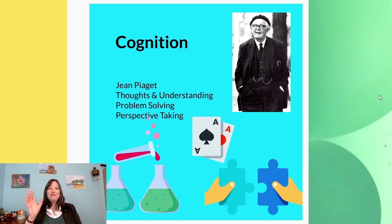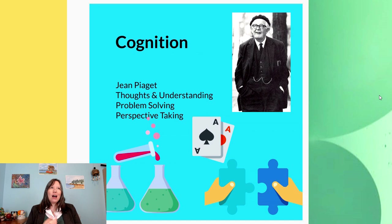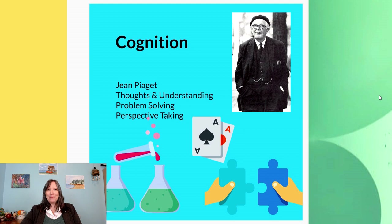Our fifth theory is Jean Piaget's theory of cognitive development. Piaget believed that how we understand, think, solve problems, consider other people's perspectives, and think about other people's thinking can really change as we get older. We'll talk about his different stages as we play the game.